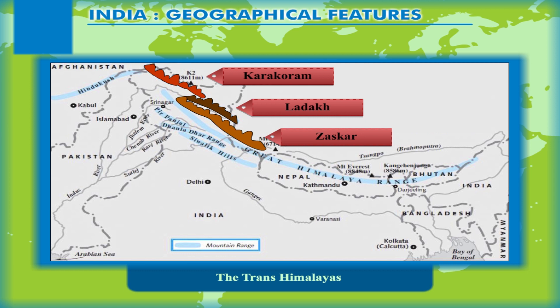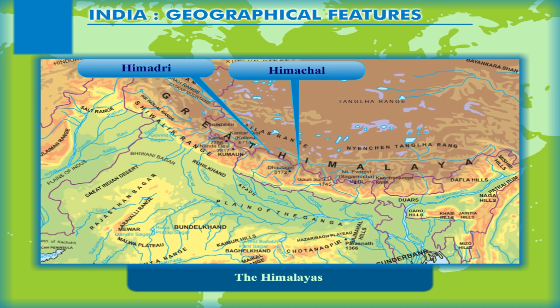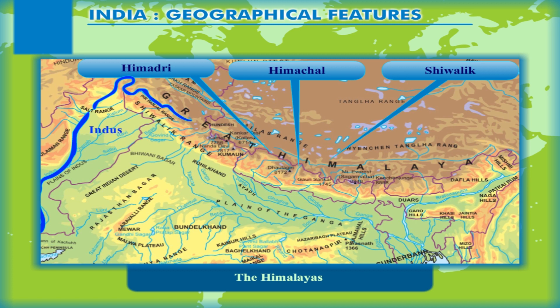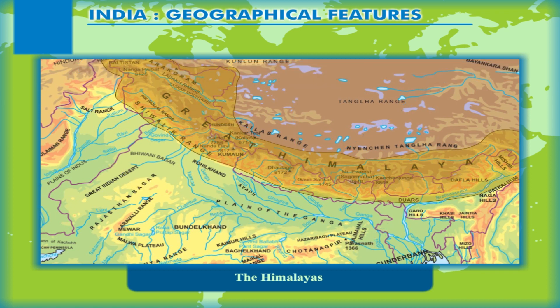The Himalayas are young fold mountains and a group of three parallel ranges — the Himadari, the Himachal, and the Shivalik — that extend from River Indus in the west to River Brahmaputra in the east. They run in a northwest to southeast direction, forming an arc for about 2,500 km. The mountain region, with an area of about 500,000 km², is the highest region in the world.